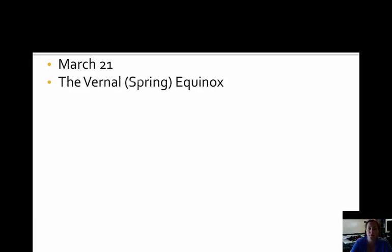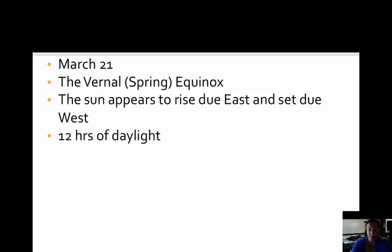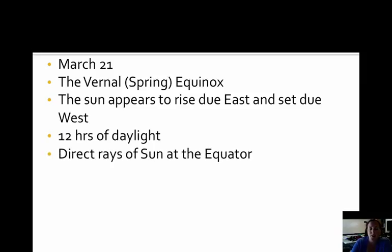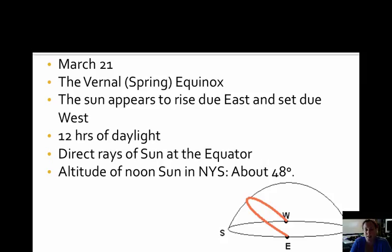Our next date is March 21st, which is the vernal or spring equinox. Equinoxes are very special days. This is when the sun appears to rise due east and set due west — everything lines up just perfectly on the equinoxes. There are equal hours of daylight, so 12 hours of daylight on the equinoxes everywhere across Earth's surface. Direct rays of the sun are right at the equator. The altitude of the noon sun in New York State is about 48 degrees, so it's about halfway up.